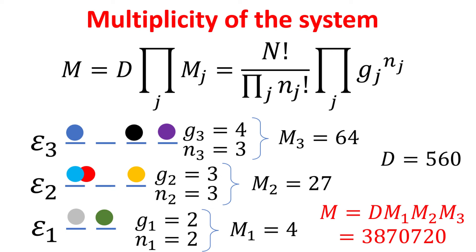To conclude, we will end this with a simple example of a 3 energy level system, with the number of particles and degeneracy for each level as indicated. Using the formulae we discussed earlier, we can calculate the multiplicity m for each level and the multiplicity d.